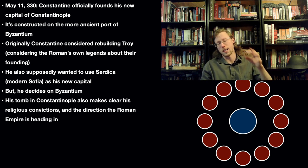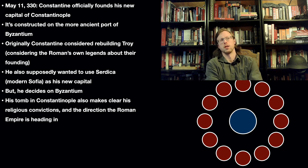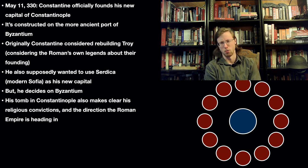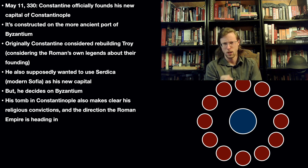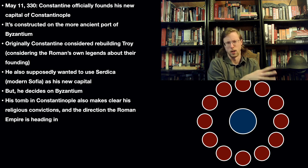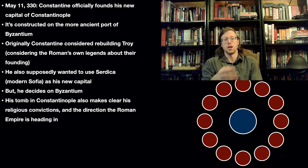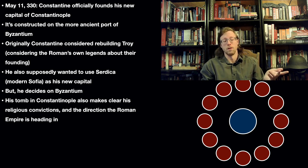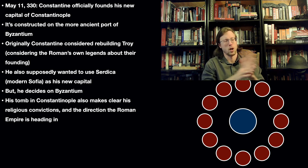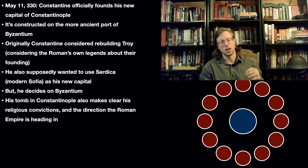However, just choosing that site wasn't necessarily a done deal. There exists in some sources evidence that he maybe was considering other areas. We know he supposedly wanted to build up Serdica, which is the modern capital of Sofia, Bulgaria. He wanted to use that, then decided not to. He also wanted to rebuild Troy, because ancient Roman mythology tells us that the Romans believed...